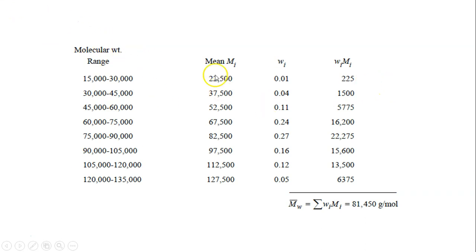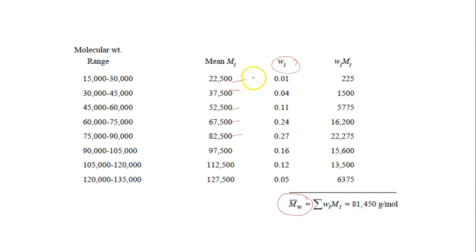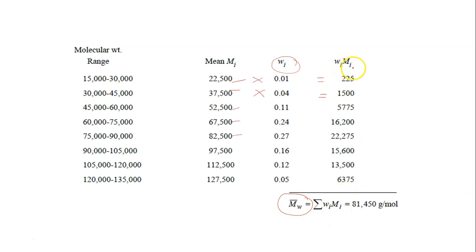To calculate the weight average molecular weight, again calculate your mean molecular weight mi for each size range and multiply by the weight fraction wi. For example, 0.04 times the mean gives 1,500. Summing all wi times mi values gives Mw equals 81,450 grams per mole.